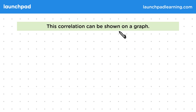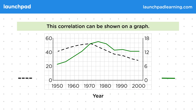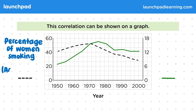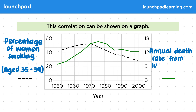This correlation can be shown on a graph. Over on the left-hand side, we have the percentage of women smoking aged 35 to 39. And over on the right, the green line shows the annual death rate from lung cancer. This graph shows a correlation. As the percentage of women smoking increases, so does the annual death rate from lung cancer. Just after 1970, you can see that the percentage of women smoking starts to decrease, and shortly after that, the annual death rate from lung cancer also decreases.